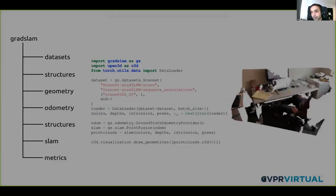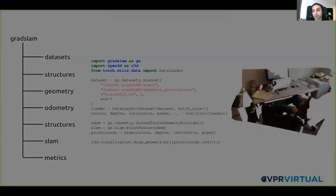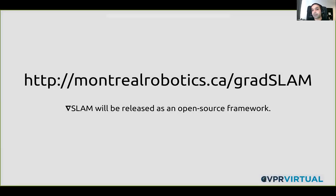We've structured GradSLAM as a PyTorch library that can be used to run differentiable and non-differentiable variants of SLAM, and we hope to make it publicly available soon, most probably by the end of this month. To follow more updates on this project, please visit montrealrobotics.ca/gradslam. You can also watch our GitHub repo to get notified when it's out. Thanks for tuning in and I'm happy to take any questions.